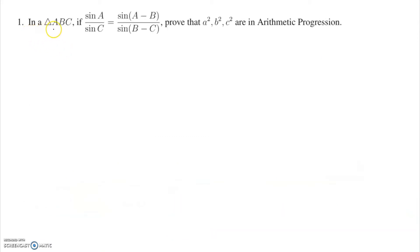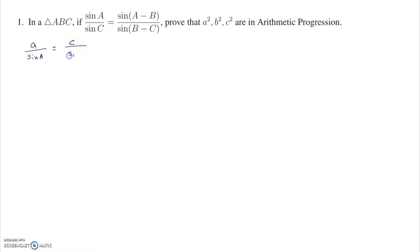Question number 1: In a triangle ABC, if sin A by sin C equals sin(A minus B) divided by sin(B minus C), prove that a squared, b squared, c squared are in arithmetic progression. We know from the sine law that a by sin A equals c by sin C, so sin A by sin C equals a by c. Let's call this equation 1.